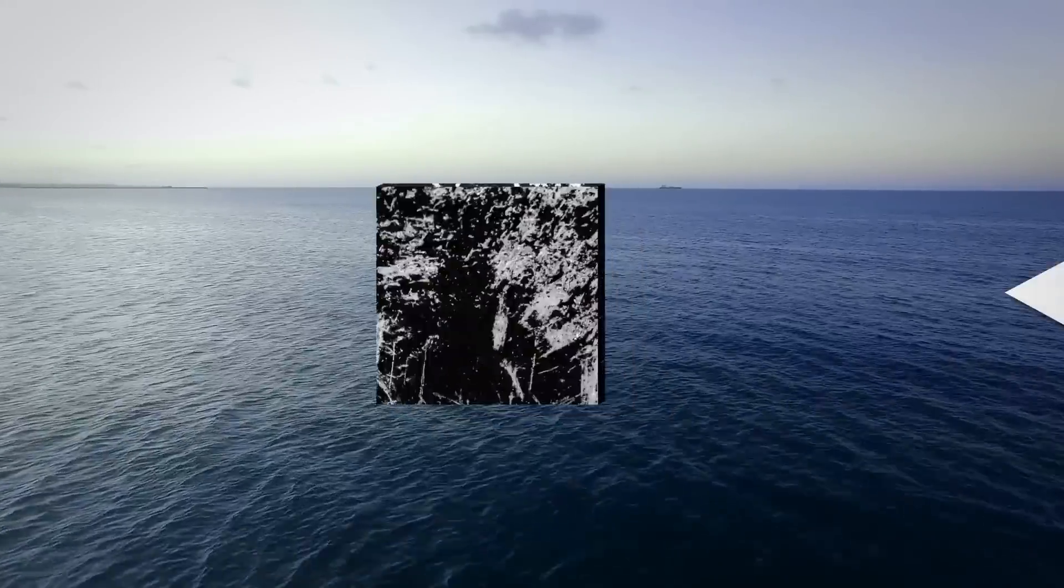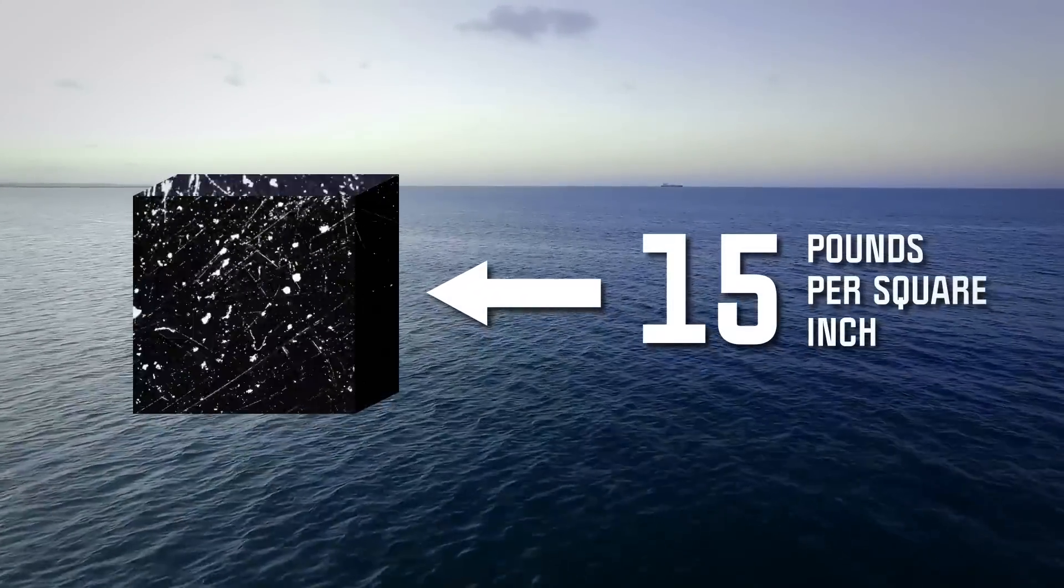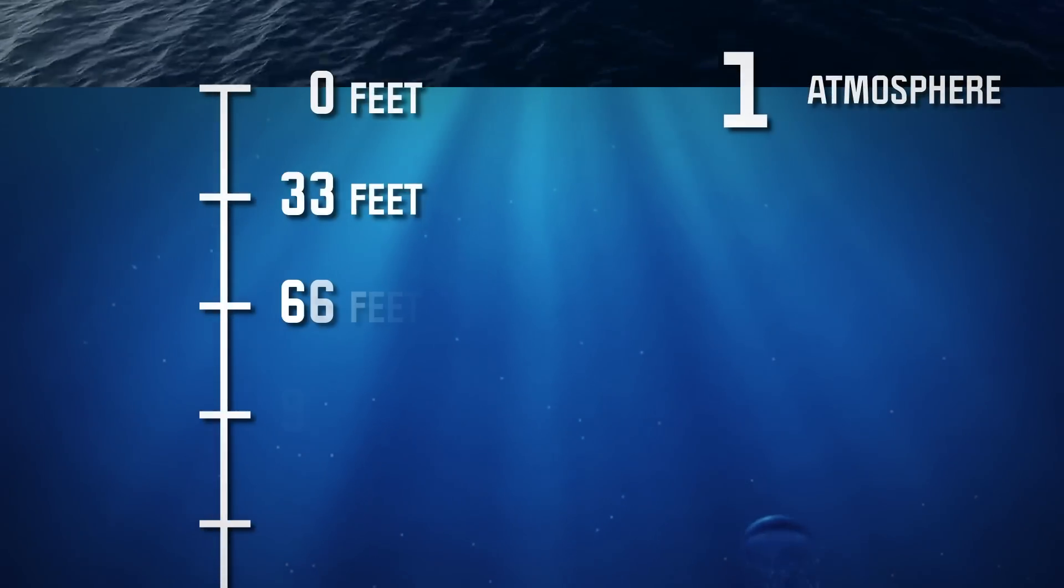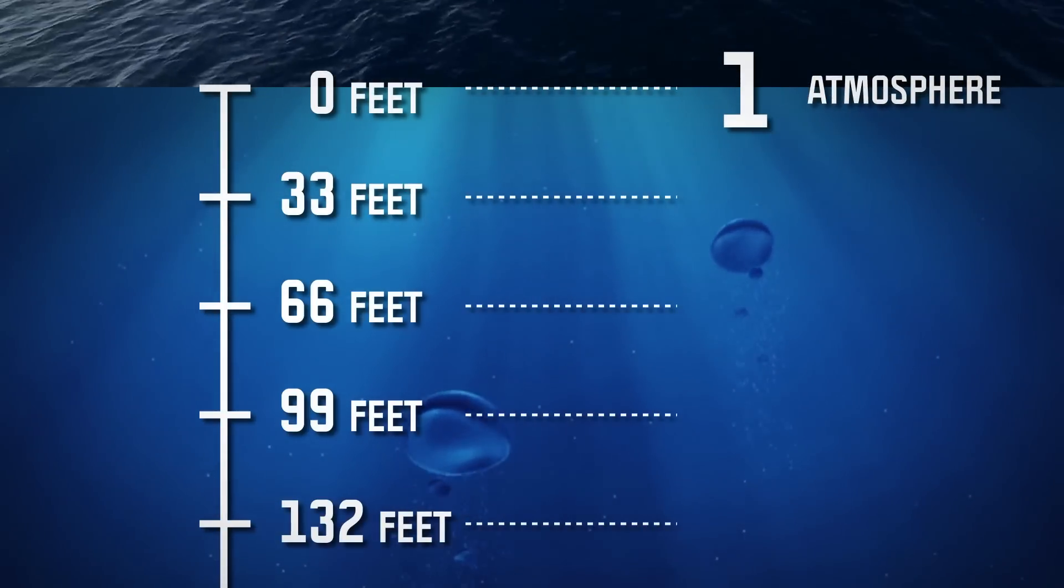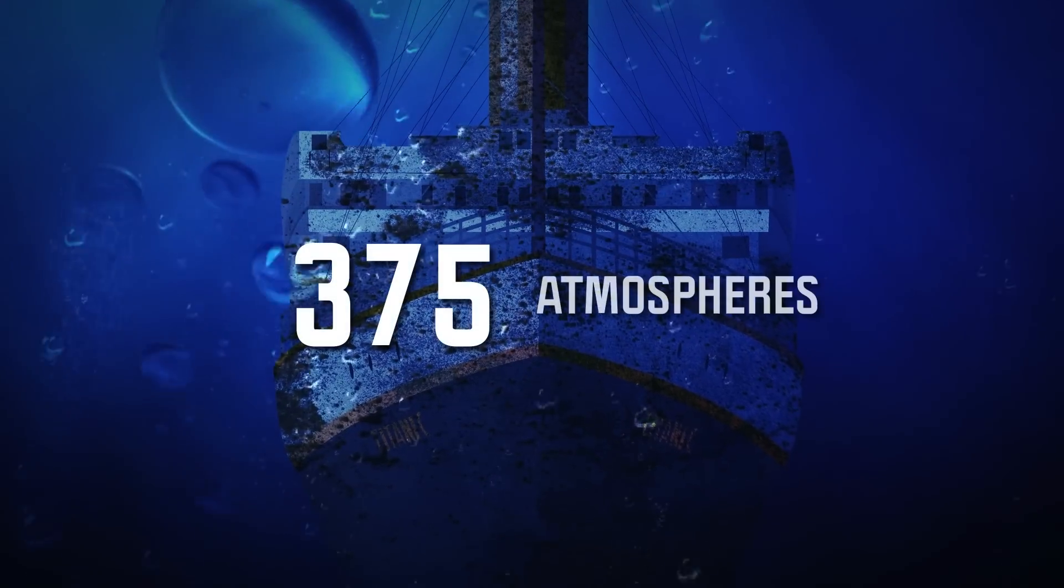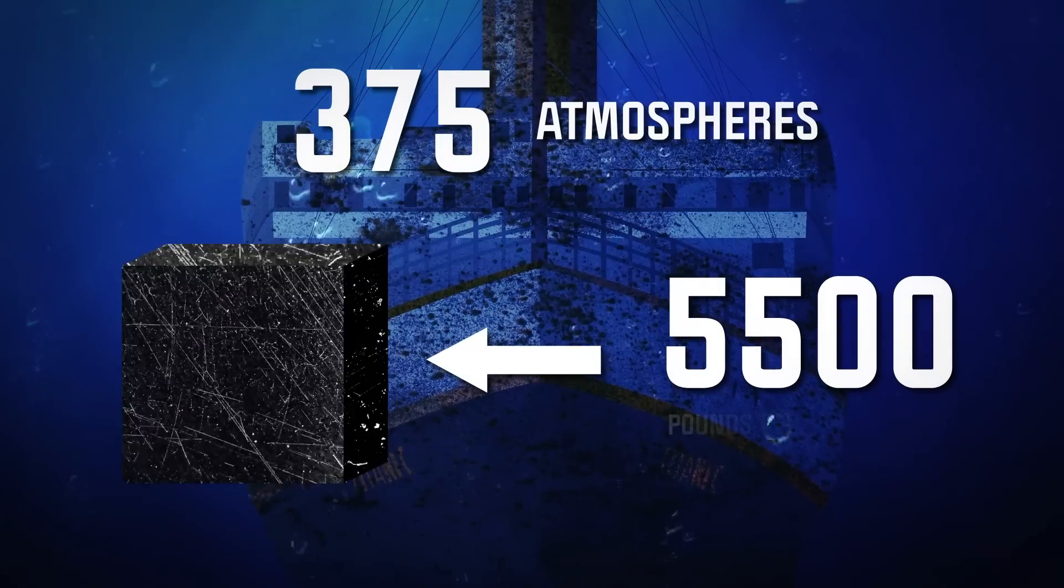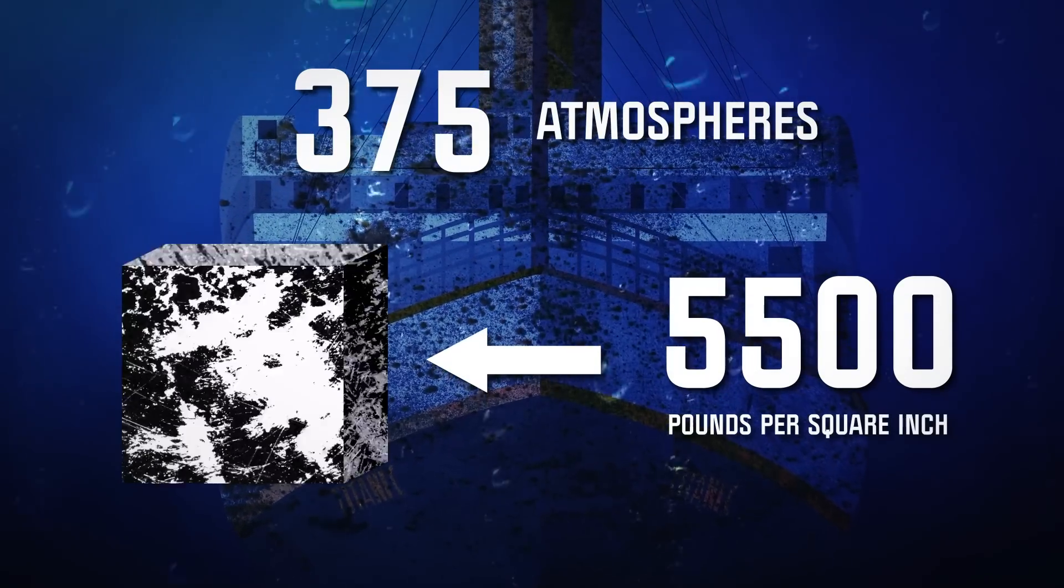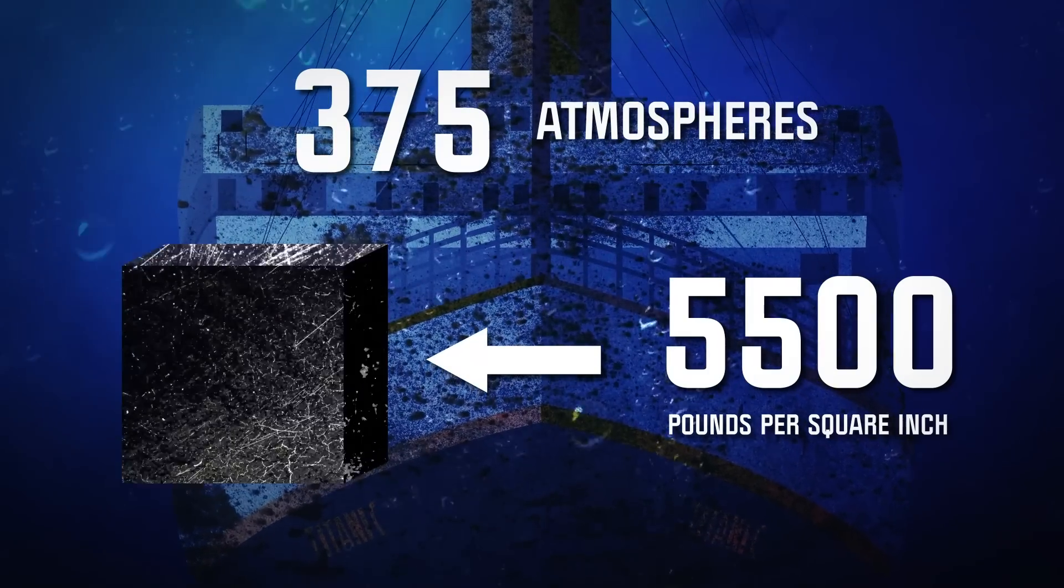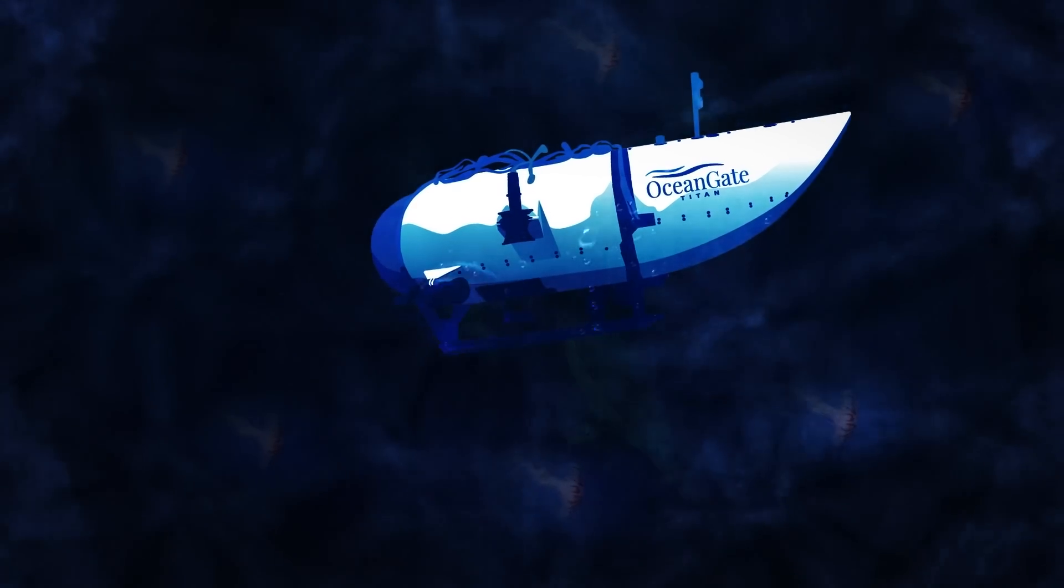At sea level, the air presses on all objects at around 15 pounds per square inch. This is called one atmosphere. For every 33 feet you go down the ocean, the pressure increases by one atmosphere. Around the Titanic crash site, it's 375 atmospheres. In other words, every square inch of any object around the Titanic experiences 5,500 pounds of pressure. But, so far, so good. The Titan is slowly submerging.